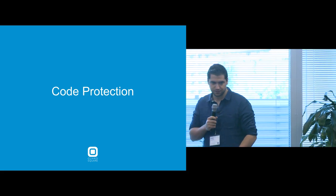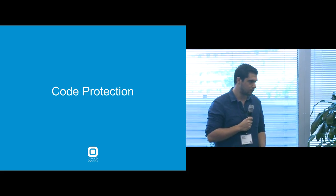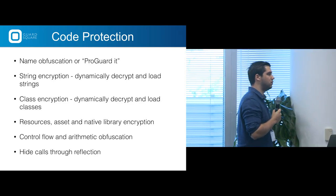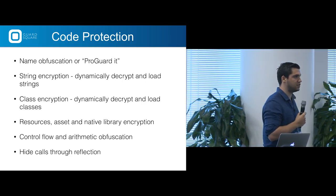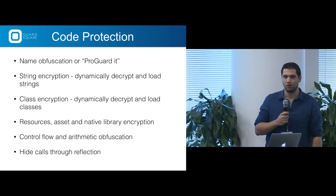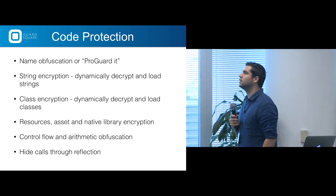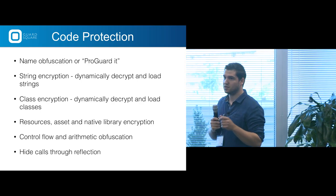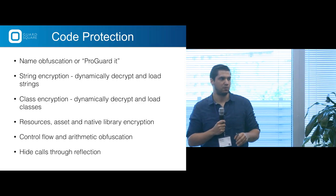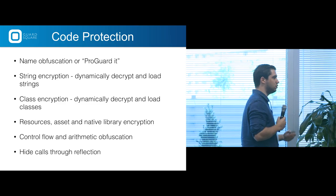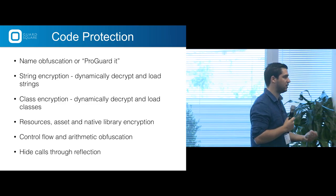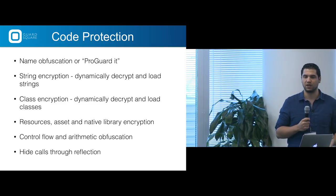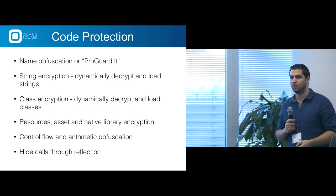Now, code protection. The first step is name obfuscation — or as we like to call it, ProGuarding. This means changing the names of your classes and methods to something human-unreadable, something that says nothing to a human. But it's semantically equivalent, so it runs perfectly fine on the device.